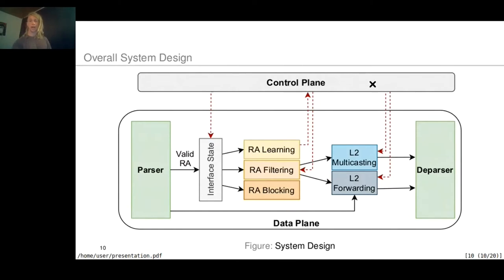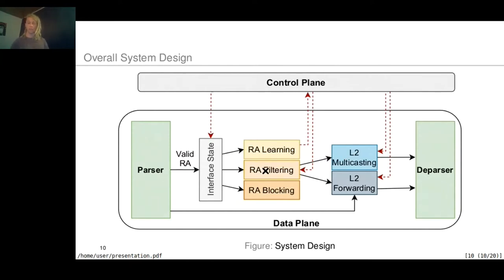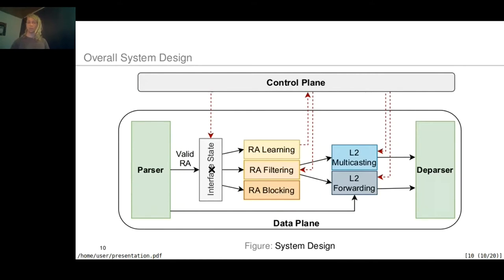The control plane sets up the layer 2 forwarding table of the data plane by creating a mapping between the destination address and the egress port. It adds hosts to the multicasting table for broadcasting, and it provides filtering rules — either by manual configuration or automatically by processing router advertisement packets from interfaces in the learning state. The control plane is also responsible for state transitions; every interface can be transitioned between the states: learning, filtering, blocking, or RA-GUARD turned off.